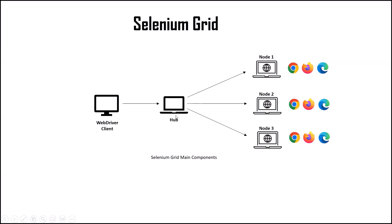So what is Hub? Hub is basically a server which is running on a machine and continuously listens for requests that come from the WebDriver client. When we run our WebDriver test script on a Selenium Grid, the WebDriver client first connects with the Selenium server, and then starts forwarding all the requests to the Hub. After that, the Hub processes all those requests by routing test commands to the remote machines or nodes.